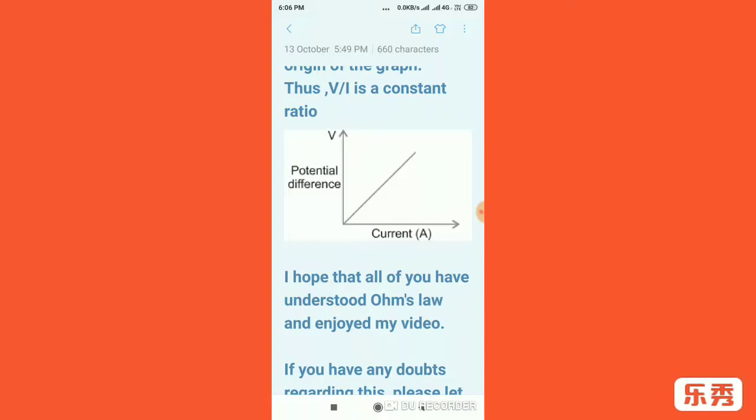So I have given a graph here for your reference. The graph will be obtained like this. The potential difference is the y-axis and current is the x-axis. Now if you see, a straight line is obtained in this case.